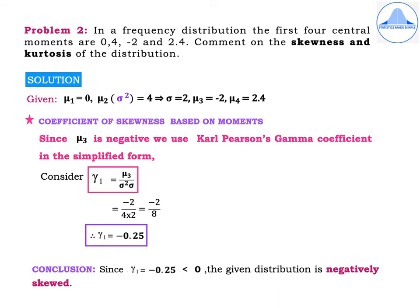The formula is γ1 = μ3 / σ³, where σ³ in the denominator is written as σ² × σ for simplification. Substituting the values: γ1 = −2 / (4 × 2) = −2 / 8 = −0.25. Since γ1 = −0.25 < 0, the given distribution is negatively skewed.